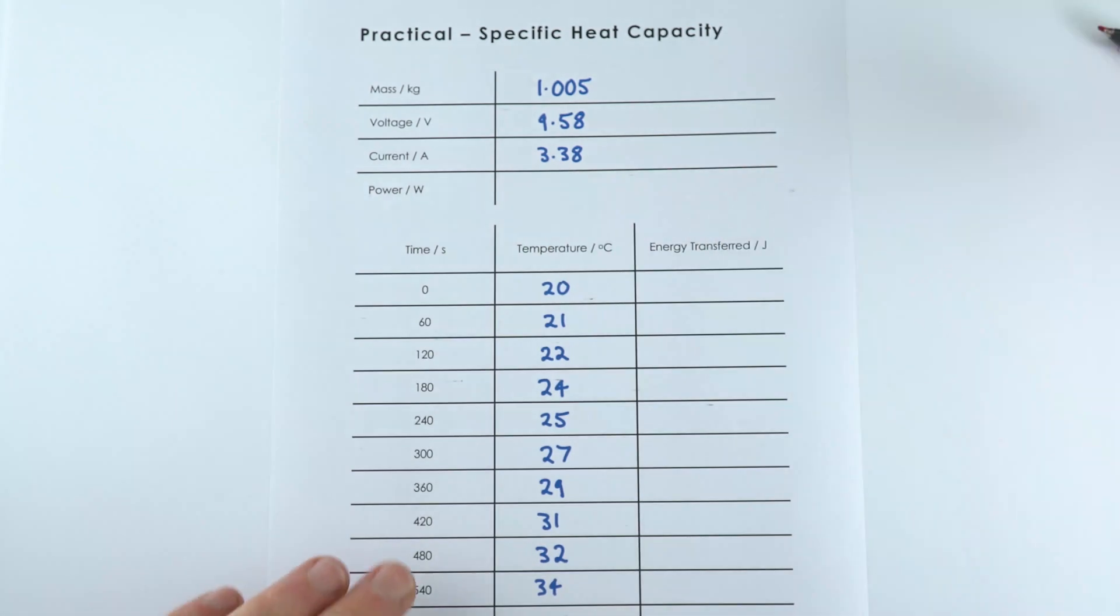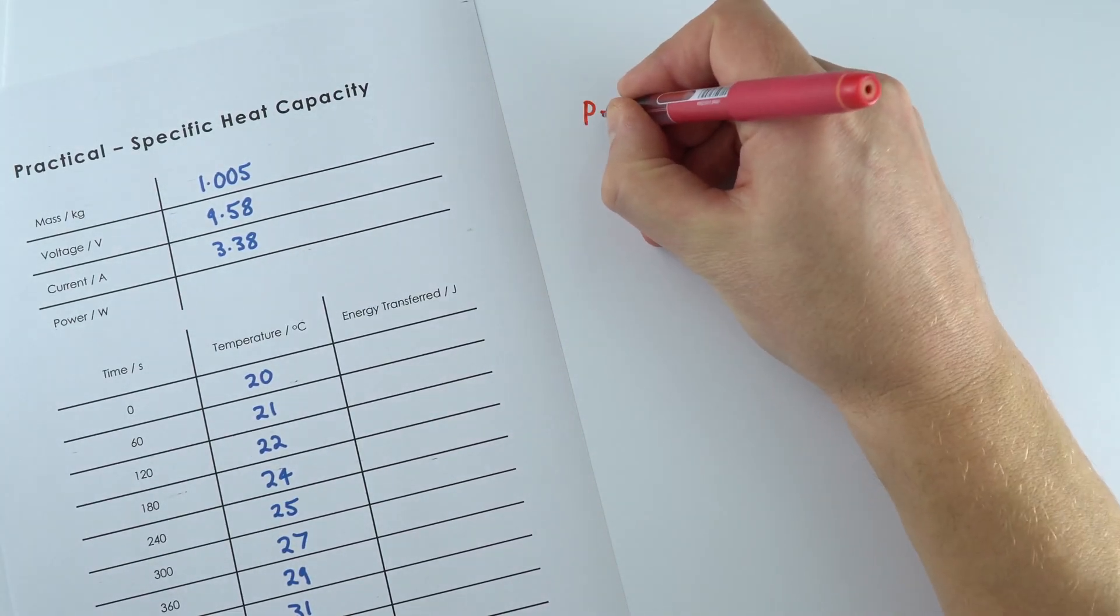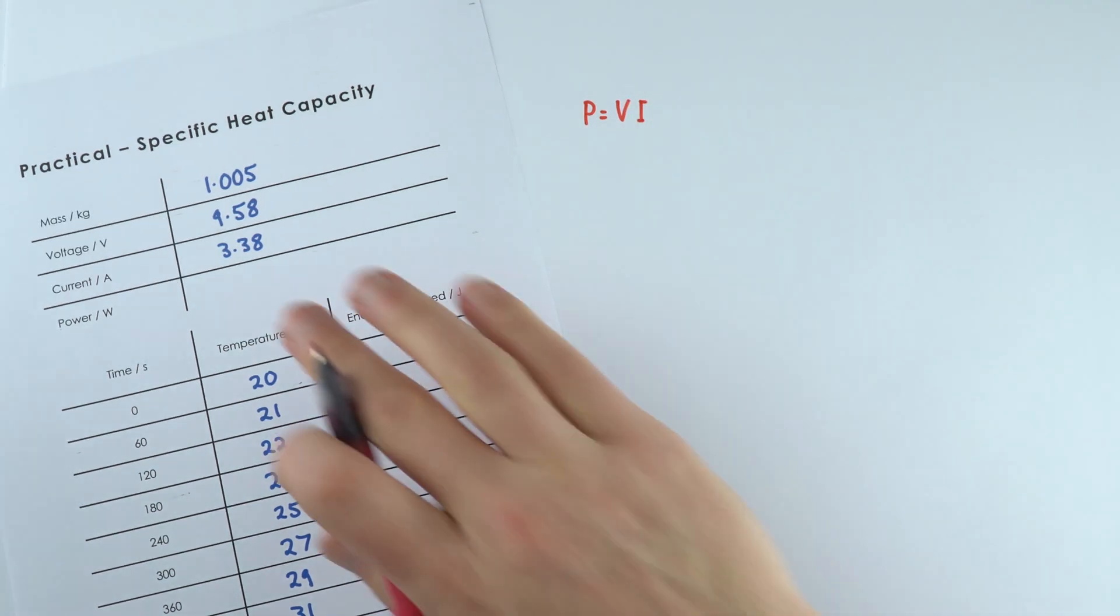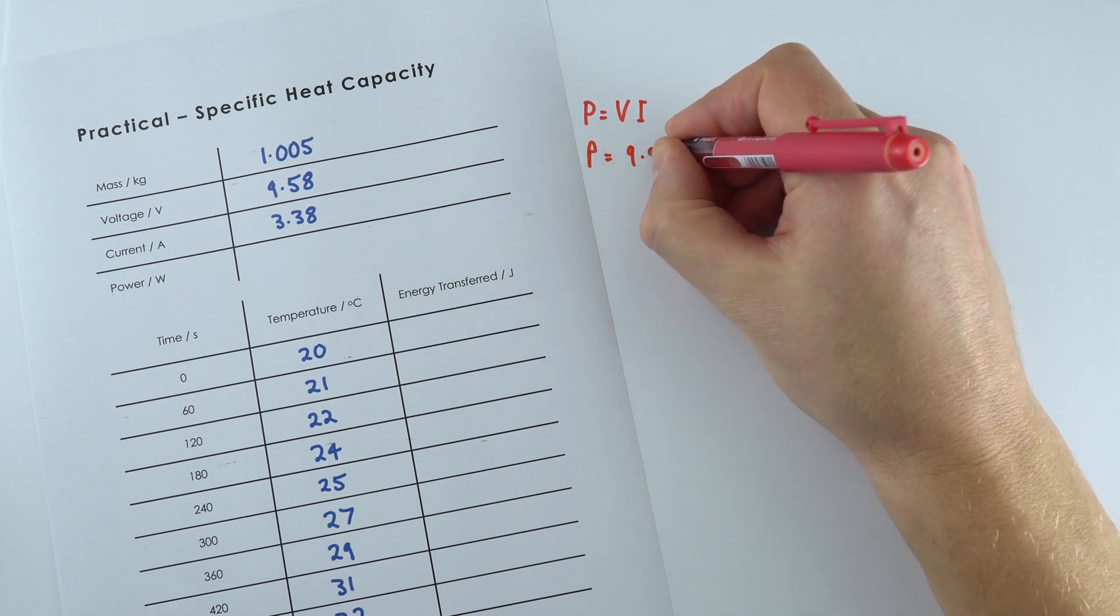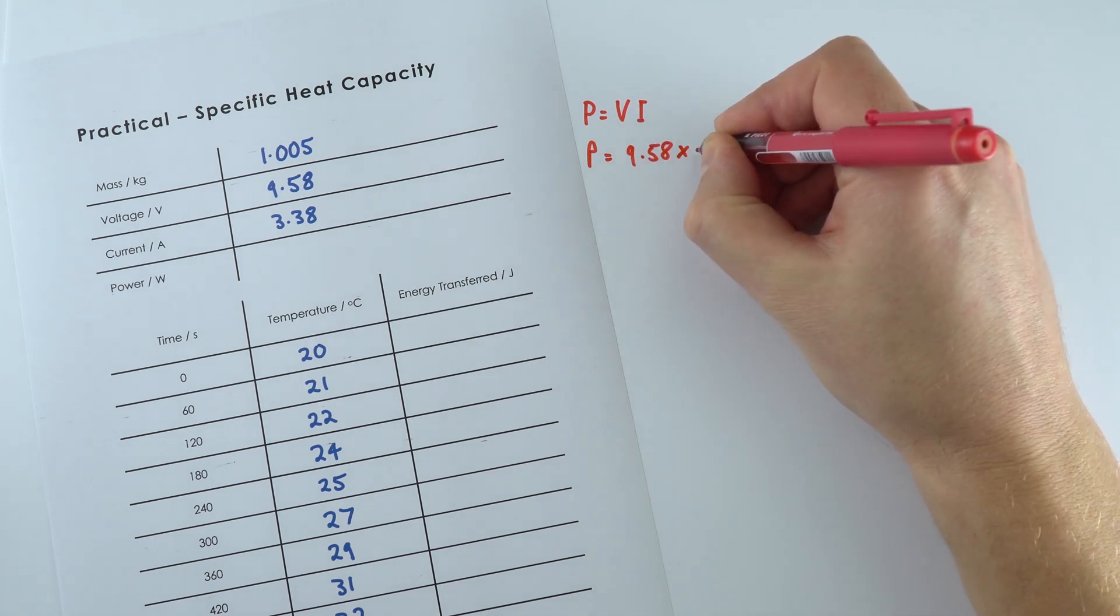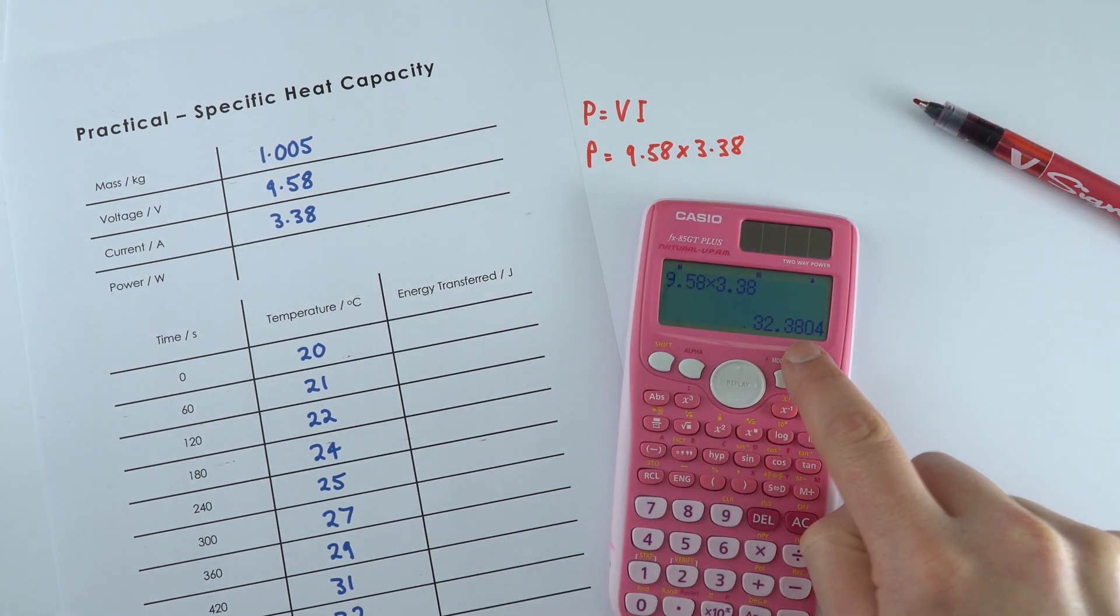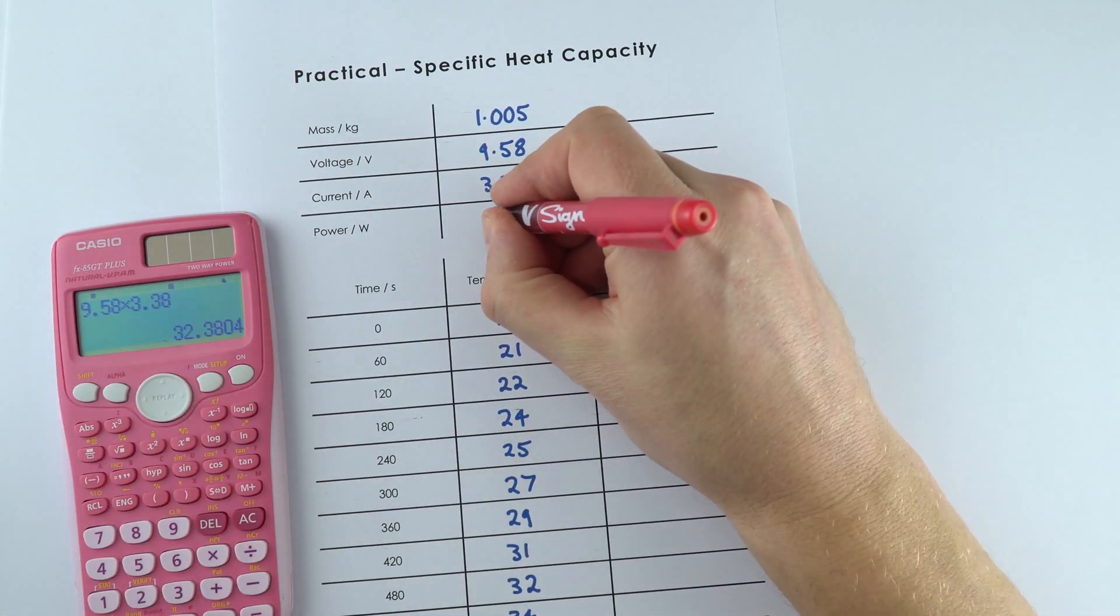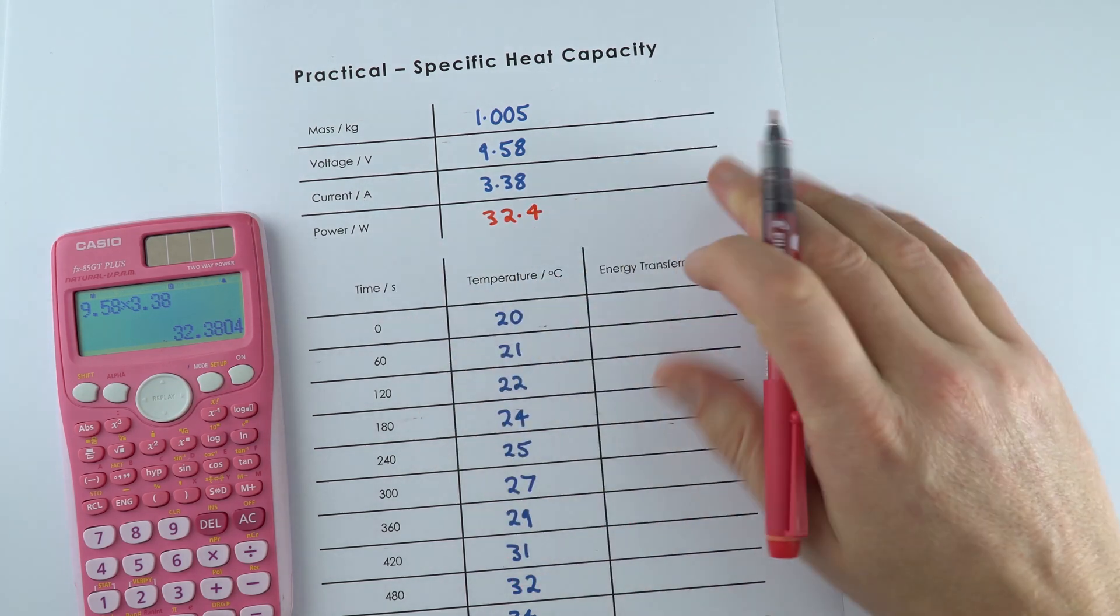And to work out the power, we're going to use the equation that says the power is equal to the potential difference multiplied by the current. So in this case here, the electrical power is going to be equal to 9.58 multiplied by 3.38, which equals 32.38. So I'm just going to write down my value for the power as 32.4, and that's measured in watts.